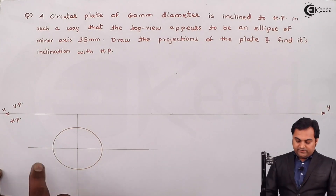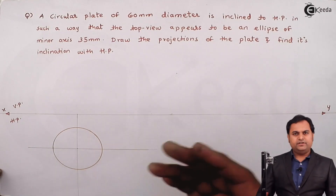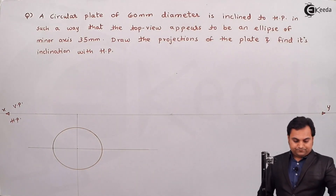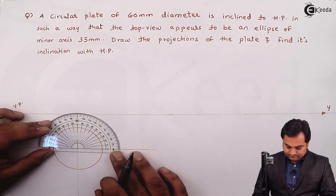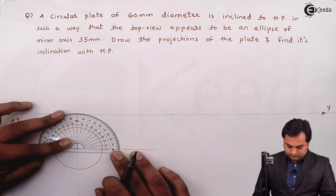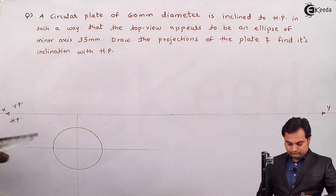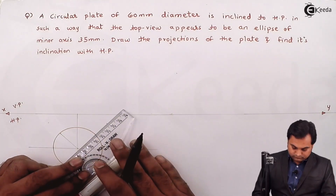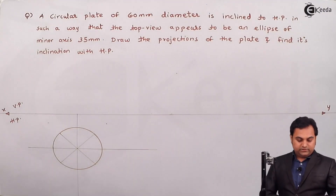Now I'll divide the circle into 8 equal parts — it can also be divided into 12 equal parts for more points, but 8 equal parts is also correct. I'll measure an angle of 45 degrees on both sides, then label the rotation points.